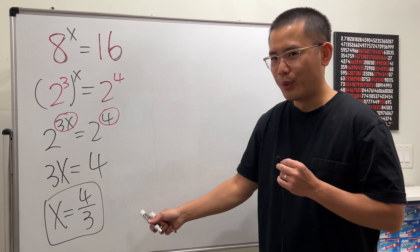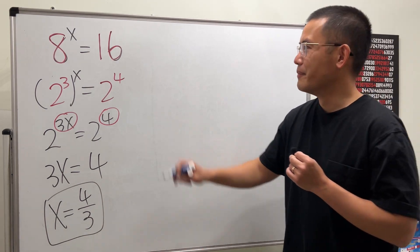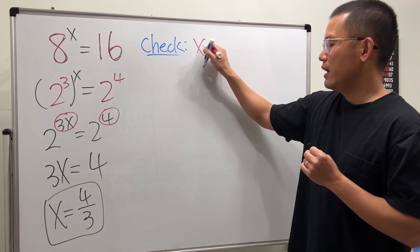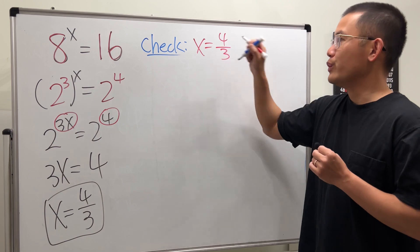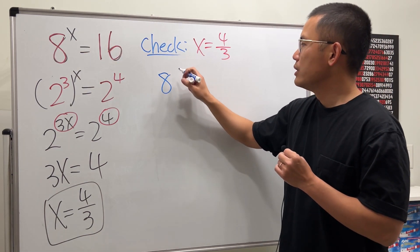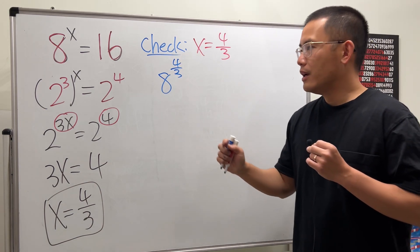Really? Are we really done? Well, I'm going to check the answer for you to convince you guys that this is actually the answer. So here is the check. We are going to check if x is equal to 4 over 3 really works. Put this back here. 8 to the 4 over 3 power. Like this. Okay.